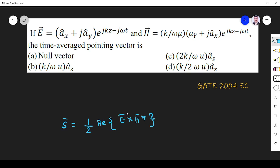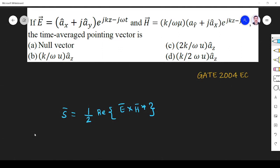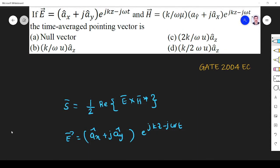E they have given, what is E? E is ax plus jay ay e power jkz minus j omega t and H they have given, H is k by omega mu ay plus j ax e power jkz minus j omega t.